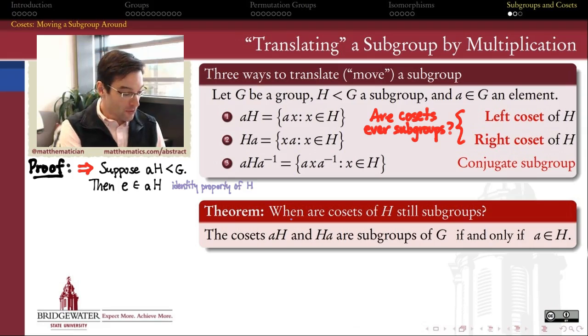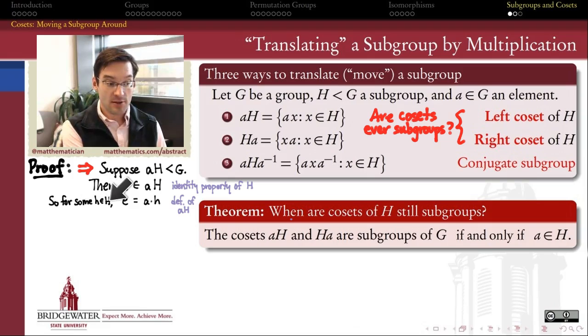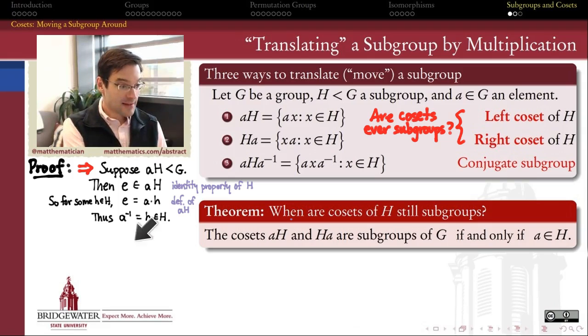Well, what do we know? We know for sure that because AH is by assumption a subgroup, that means the identity element of G belongs to AH. That's the identity property of a group applied to H. Because H is a subgroup, it's a group in its own right. And if E belongs to AH, then that must mean that there is some element H in the subgroup big H such that E is equal to A times H. That's what it means to be in the left coset, A times the subgroup H. But if E is equal to AH, then I can solve this equation for A inverse. A inverse is equal to H.